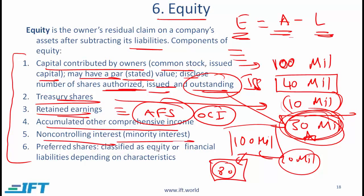Non-controlling interest is the minority interest. If you own a company with 80% ownership, then the other party has 20% ownership. That 20% ownership is shown as the non-controlling interest or minority interest, which is also equity. Finally, preferred shares or preference shares are classified as equity or financial liabilities depending on their characteristics. If preferred shares are redeemable at a certain price by a certain date, they must be classified as liabilities. Perpetual preferred shares, on the other hand, are generally classified as equity.